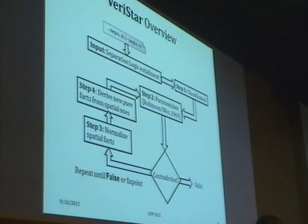Now I'm going to give you an overview of how the theorem prover works. Veristar's input takes entailments in separation logic. Step one is clausification. We represent the negation of the input entailment as a set of clauses. Clauses here are just disjunctions of literals. The goal of the theorem prover is to show that this initial set of clauses, which encodes the negation of the entailment, is inconsistent or implies false.